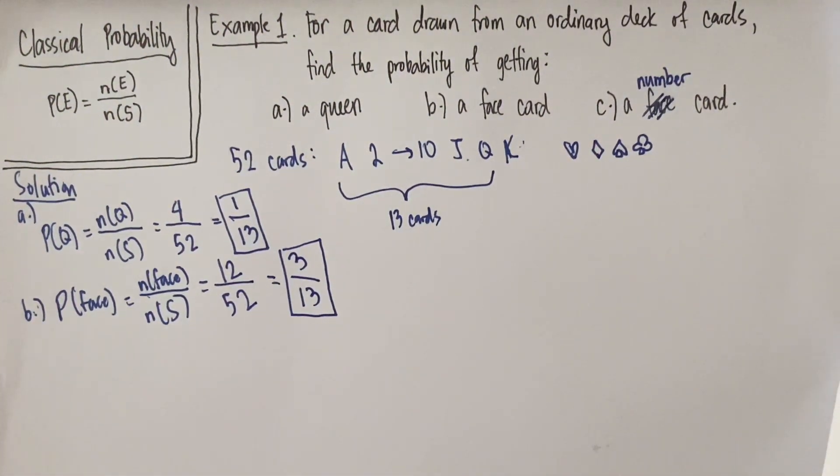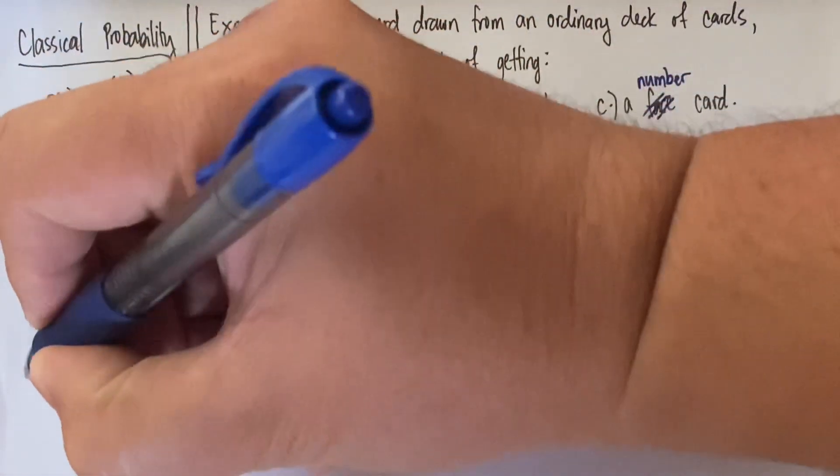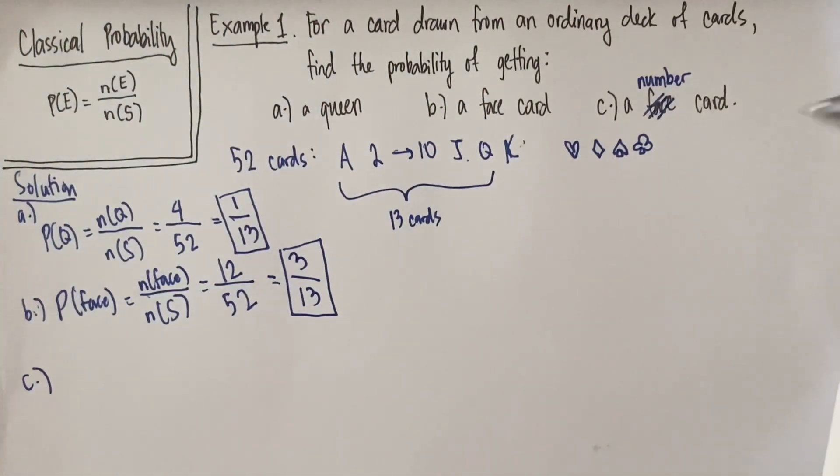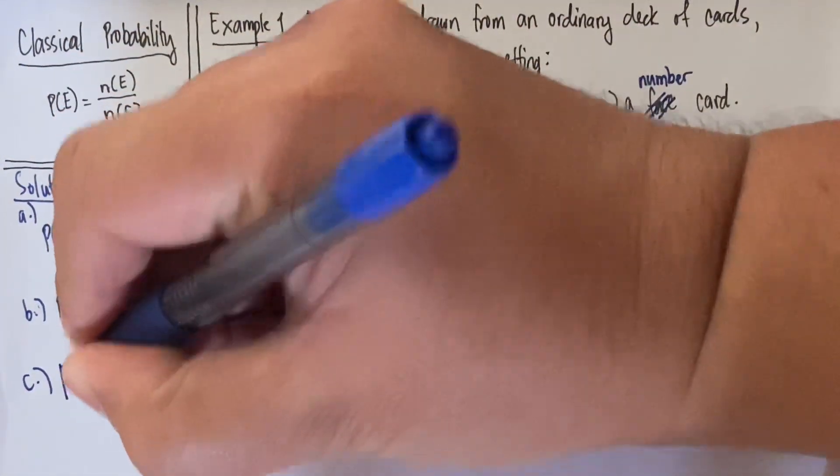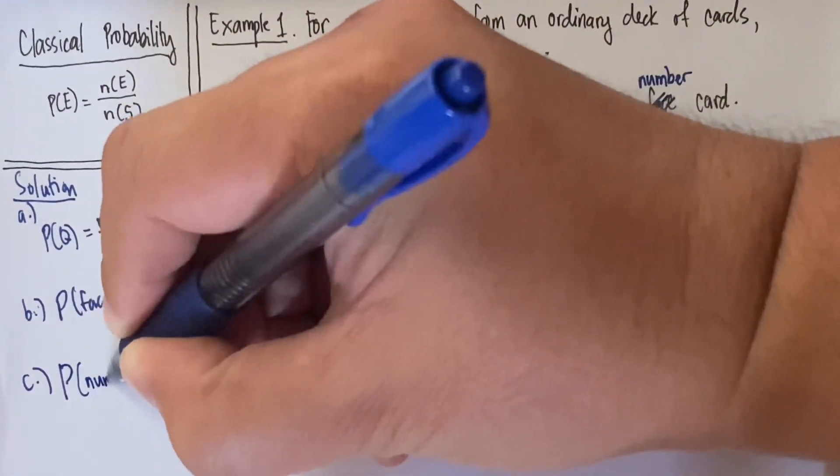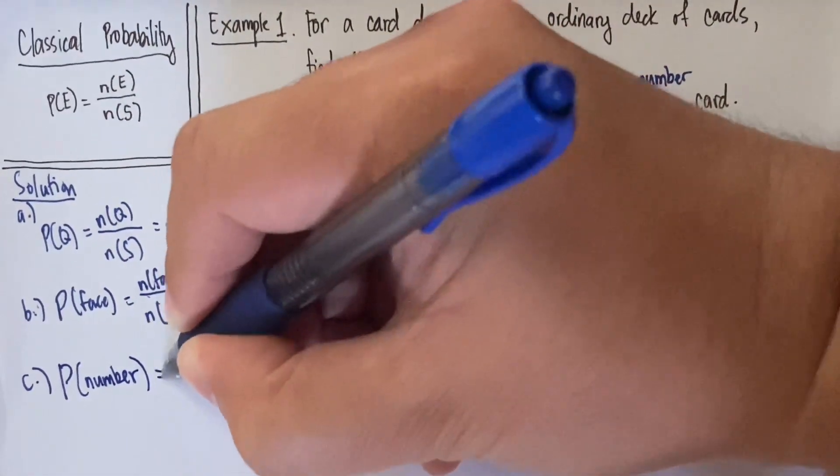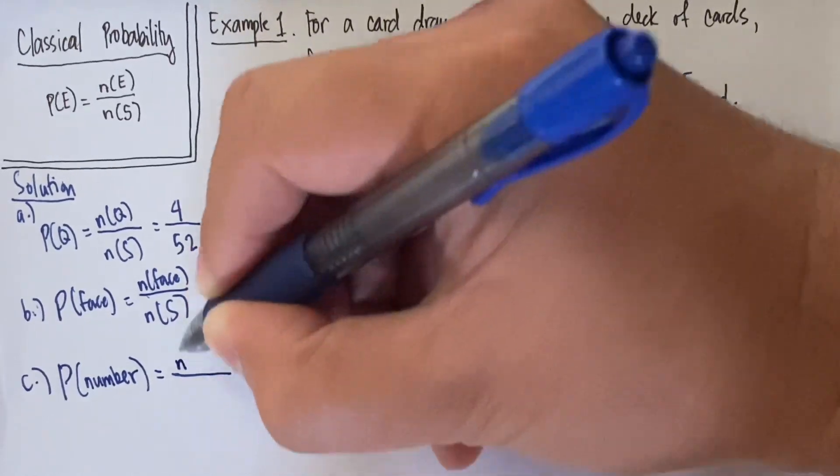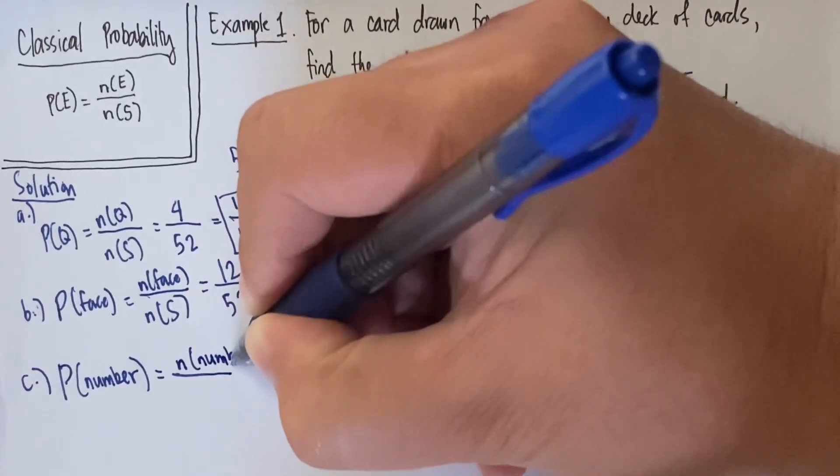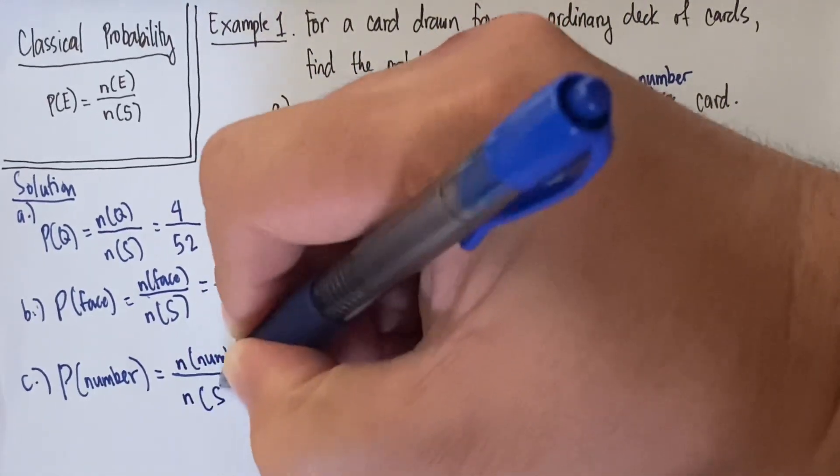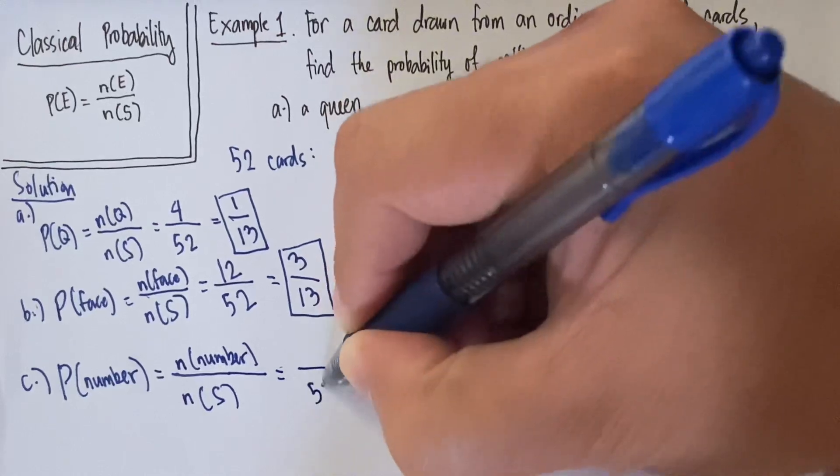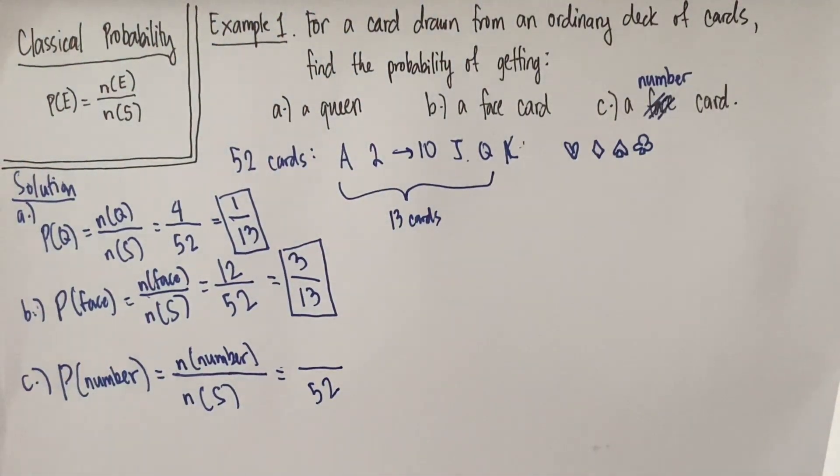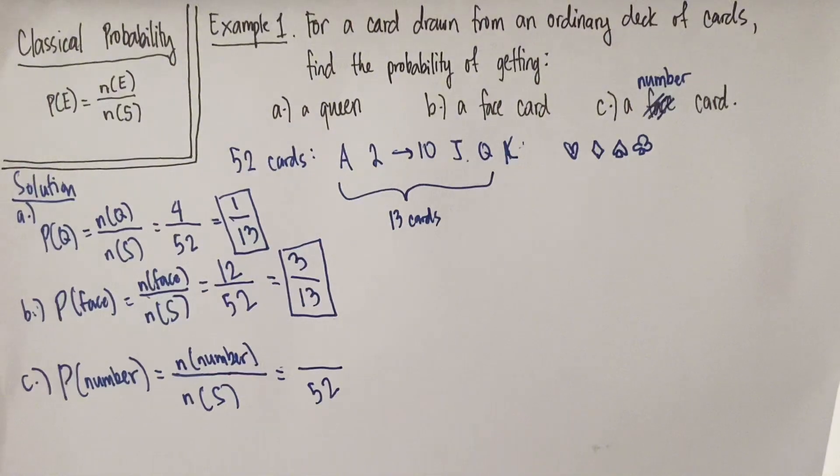Let's proceed to letter C. And letter C is asking about a number card, which I changed. We're going to make this the probability of getting a number card. And we will denote it as the cardinality of getting a number card divided by the cardinality of your sample space, which is 52. But how about the number cards? There are 2 to 10. So if we're going to count that manually, that's 2, 3, 4, 5, 6, 7, 8, 9, 10. That's only 9 of them. You may think that it's 10, but we don't have a 1, remember?